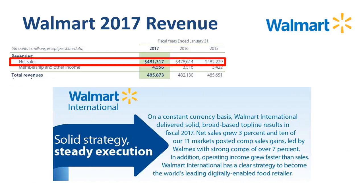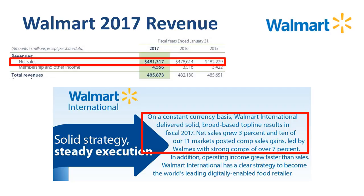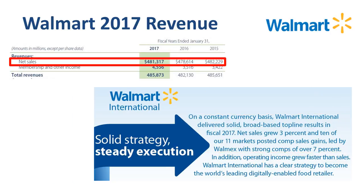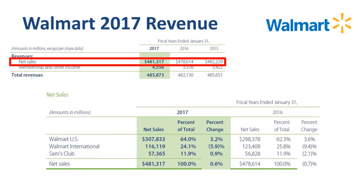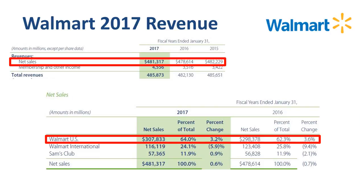That paints a very different picture. Currency effects more than explain the declines in revenue in Walmart International, and if you analyze the revenue in this segment on a constant currency basis, then you will find that net sales grew 3%. Next up is Walmart US — at 64% of total revenue it is the largest segment from Walmart, with growth of more than 3% two years in a row.